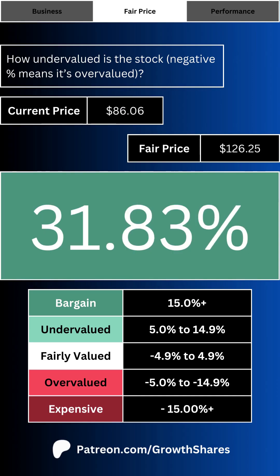Taking the eight business metrics, its current price, and a conservative projection, here's my fair price for the company. The big percentage number you see on the screen is a quick way to determine if the stock is undervalued or overvalued. A positive number means the stock right now is undervalued, and a negative number indicates an overvalued stock — you want the company's current price below its fair price.